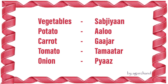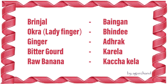Potato — Aaloo. Carrot — Gajar. Tomato — Tamatar. Onion — Piaz. Brinjal — Bangan. Okra — Bindi.